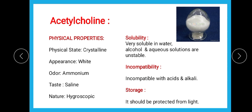The properties of acetylcholine: the physical state is crystalline — it is a white crystalline powder, as you can see in the image. It has an ammonium odor and its taste is saline. The nature is hygroscopic, meaning it absorbs moisture in the presence of air. It is very soluble in water as well as in organic solvents such as alcohol. Aqueous solutions made from the white crystalline powder are generally unstable. It is incompatible with acids and alkalis. Since it is hygroscopic, it should be stored in an airtight container and protected from light.